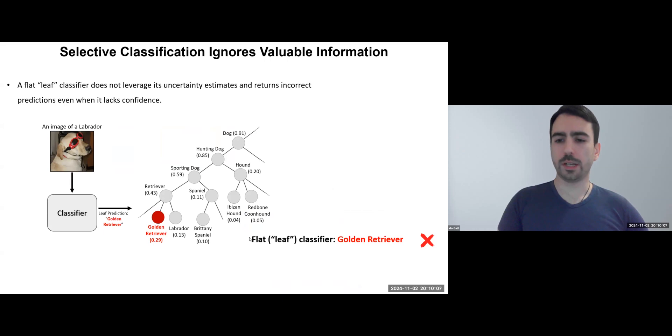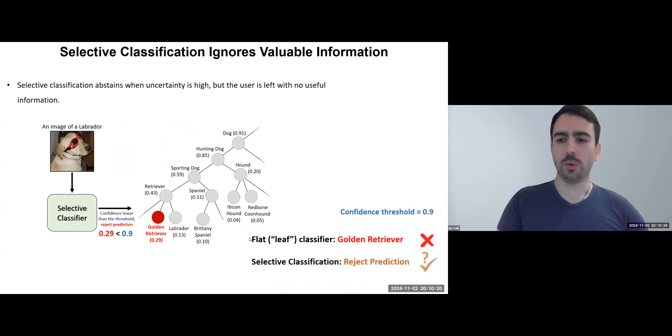Let's consider when the classifier confuses the Labrador with the goggles for a golden retriever. Without selective classification, this would be an incorrect prediction. With selective classification, we could set a confidence threshold at 0.9, which helps the model abstain from returning an incorrect prediction when it's uncertain.